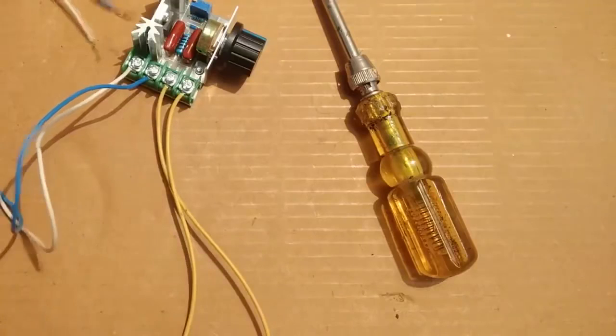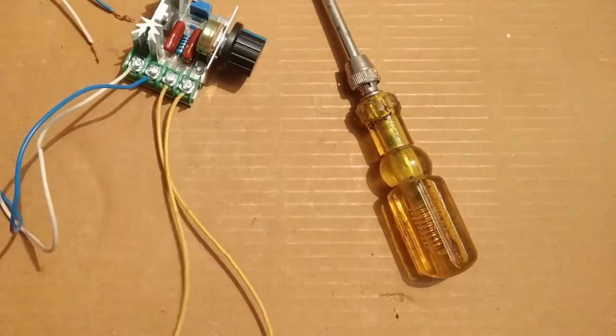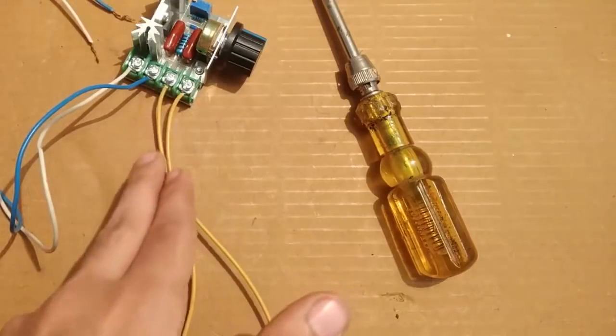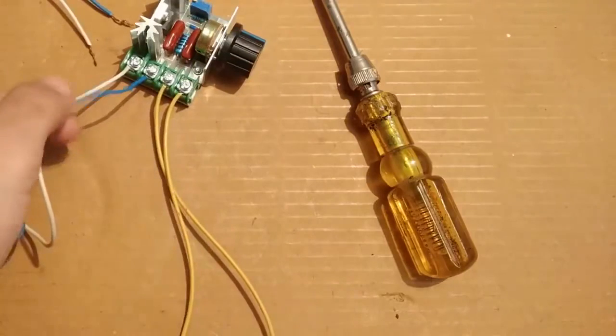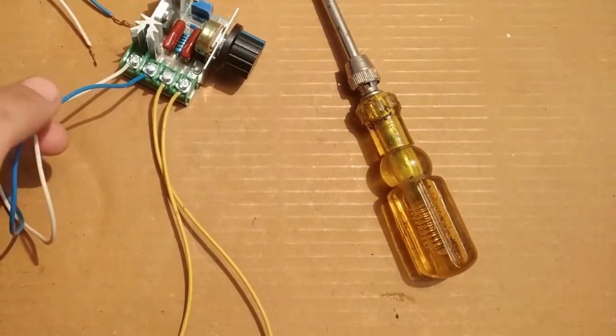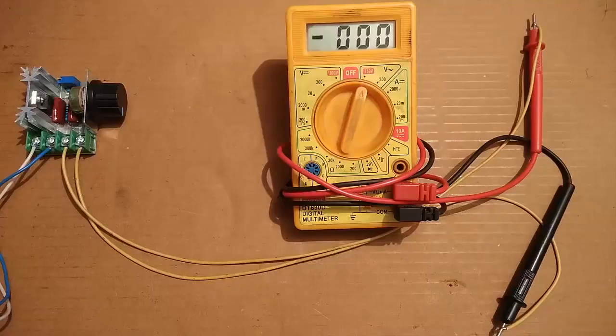These wires are for the output, separated from the input wires. The two yellow colored wires are the output wires, and these blue and white wires are the input wires. First, I am going to perform the open circuit voltage testing.